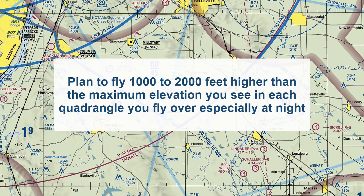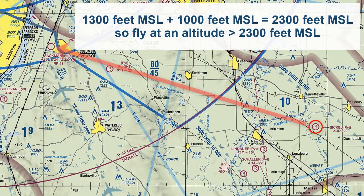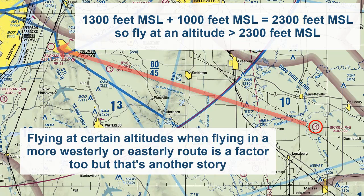When flight planning, for each quadrangle you fly over, you want to plan for 1,000 to 2,000 feet higher than the numbers you see, especially at night. So if I took off from this private airport and landed at Sackman, since the maximum elevation is 1,300 feet, you might consider flying at least 1,000 feet above, or at 2,300 feet MSL. You also have to factor in landing at Sackman and the distance between the two airports in your planning, which will be discussed in future videos.